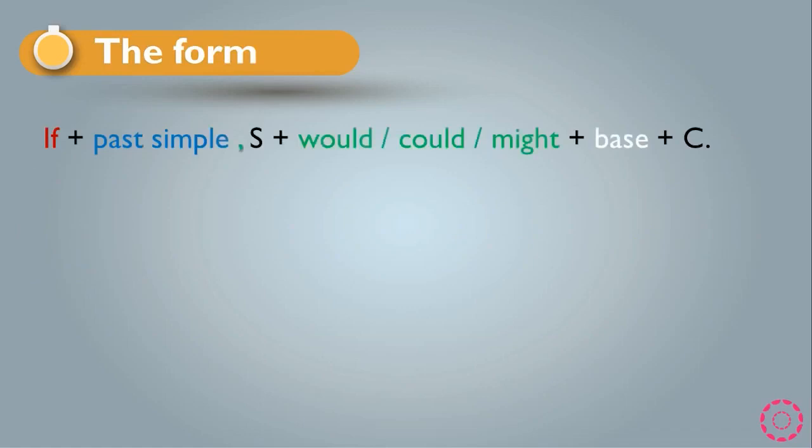Now we have the form. The first form is: if + past simple, then a comma, and after the comma: subject + would, or could, or might, + base form + complement. This is the rule for the second conditional when we want to use 'if' at the beginning of the sentence.